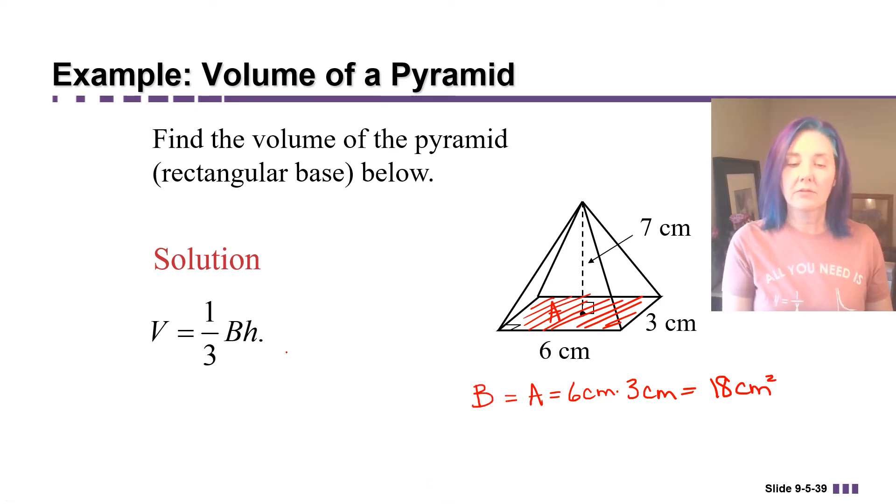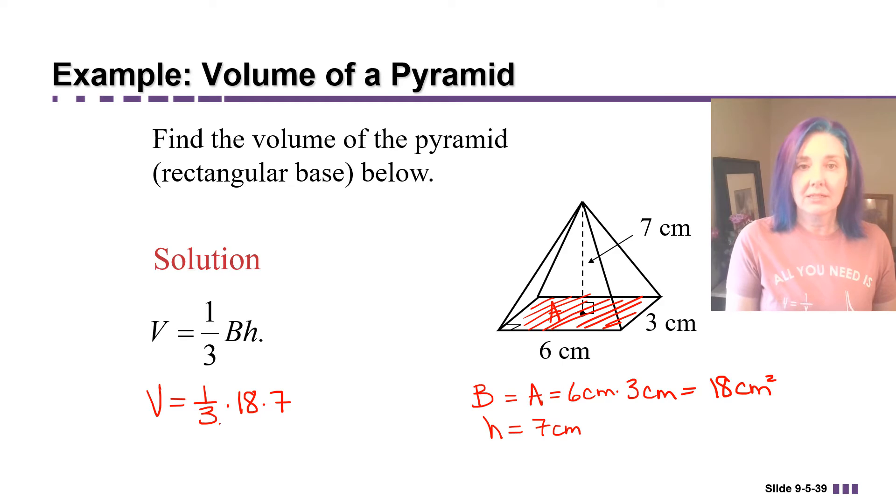That's our capital B in the formula for the volume. The height is given to us as well. That's seven centimeters. So the volume of this pyramid is one-third times 18 times seven. So one-third of 18 is the same as 18 divided by 3.